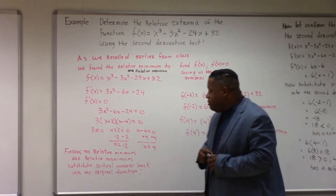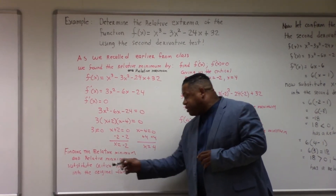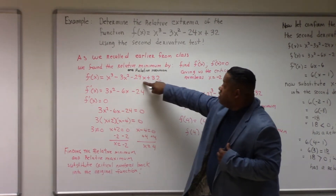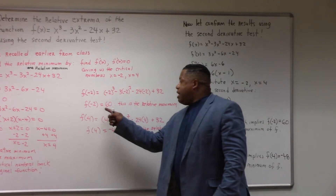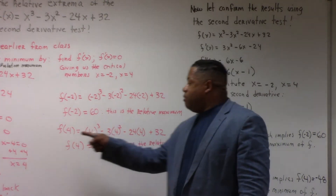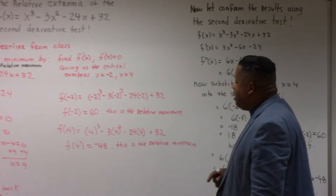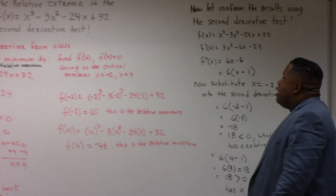To find the relative minimum and relative maximum, we substitute these critical numbers into the original function. At f of negative two, we came up with sixty, and that was the relative maximum of f. Then we substituted four into the original function and came up with negative forty-eight as the relative minimum.